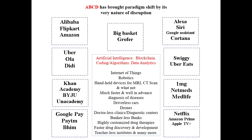All of this is possible because of the advent of A, B, C, D. A stands for Artificial Intelligence, B for Blockchain, C for Coding and Algorithms, and D for Data Analytics. We will see in the next chapters what is the meaning of all these terminologies. The last example is Big Basket and Grofers, which are home delivery organizations.